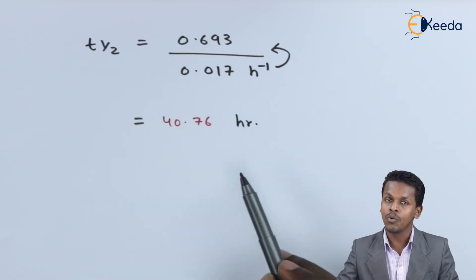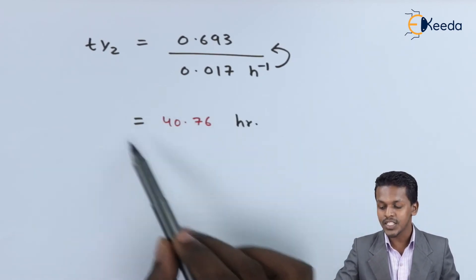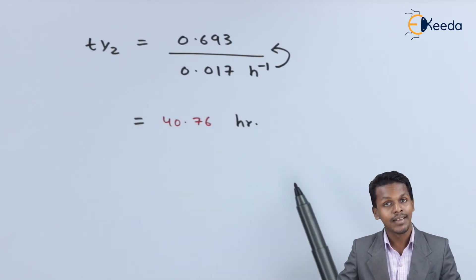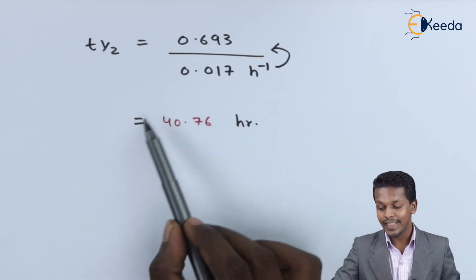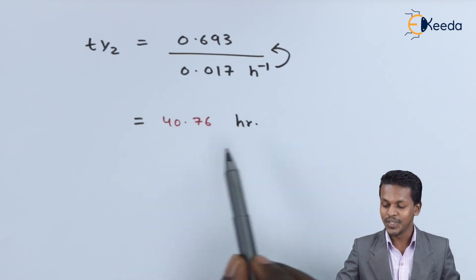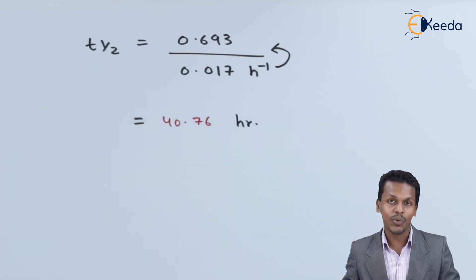This value, 40.76 hours, can be converted to minutes by multiplying with 60, and to seconds by multiplying with 60 times 60. This is how we can calculate the value of half-life.